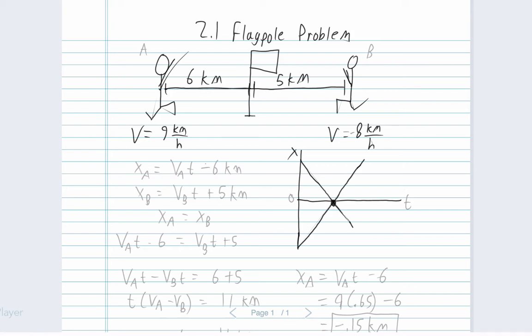Hey guys, this is Mr. Hart. In this slide, I want to go through the infamous flagpole problem. It seems like every physics student has done this problem at some point in their lives. We have two people running towards the flagpole. The first guy is six kilometers away from the flagpole and he's running at nine kilometers per hour. The second guy is five kilometers away and he's running at eight kilometers per hour.